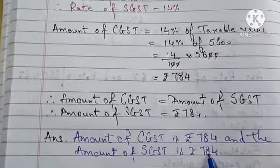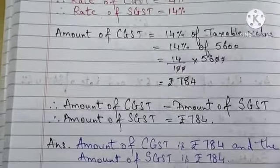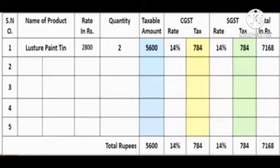This I will show you with the help of a table. In this table, the taxable value is given Rs. 5600. CGST is 14%, 14% of 5600 is Rs. 784. Similarly, SGST is also Rs. 784. The total amount with GST is Rs. 7168.